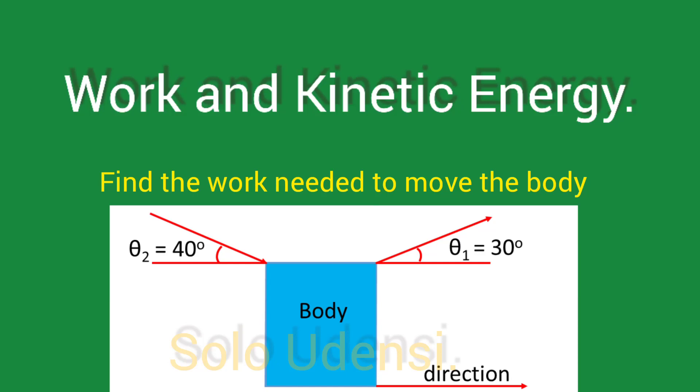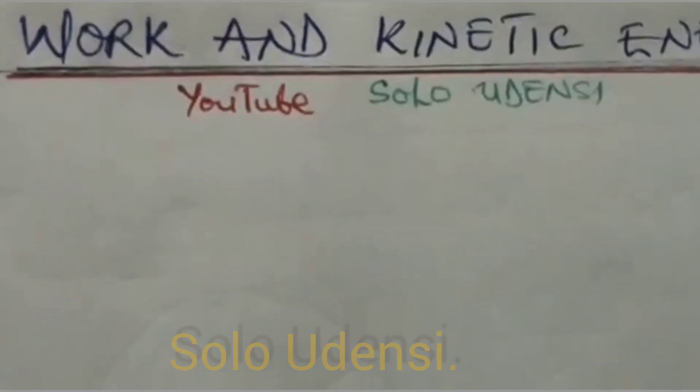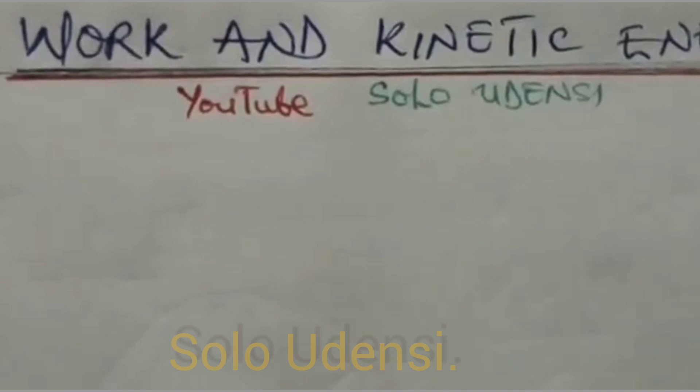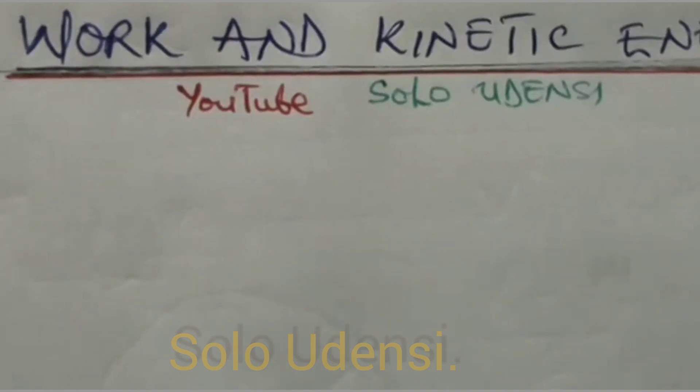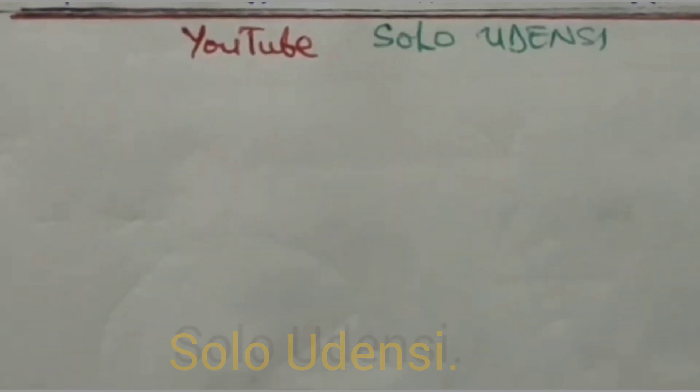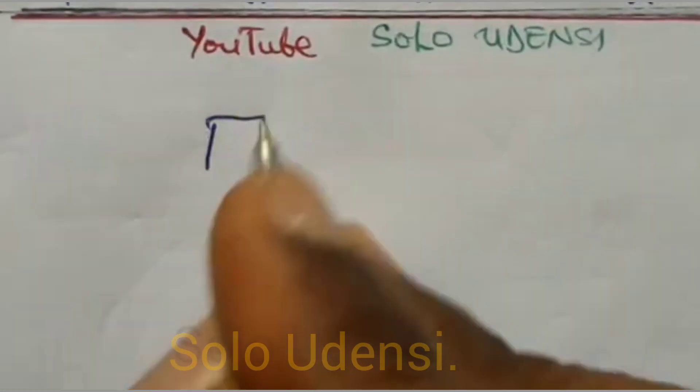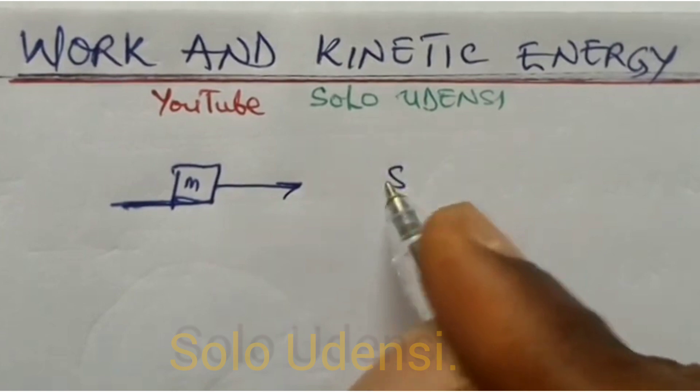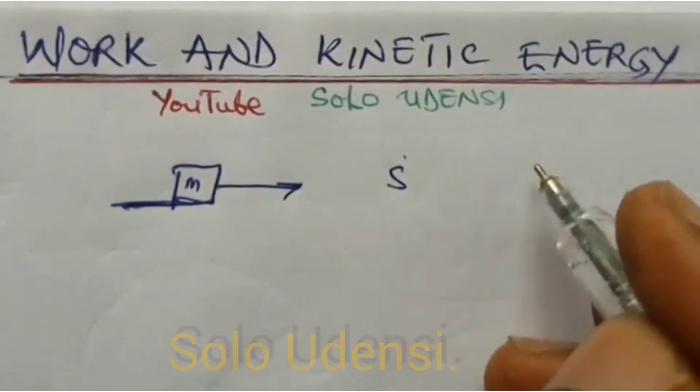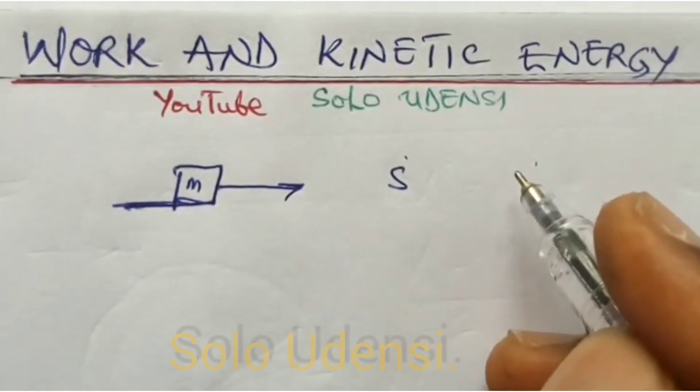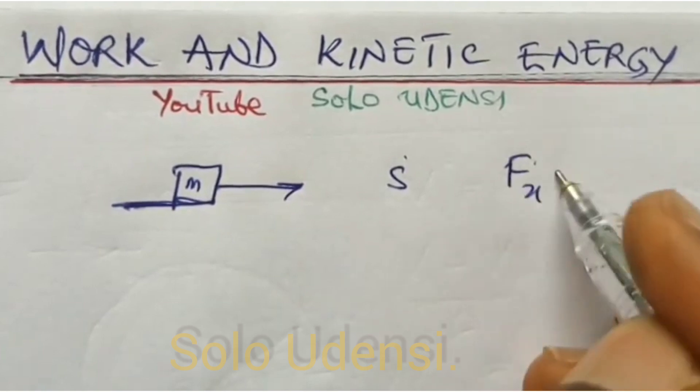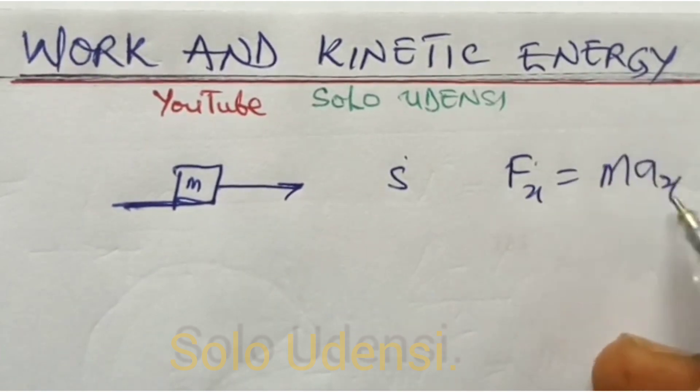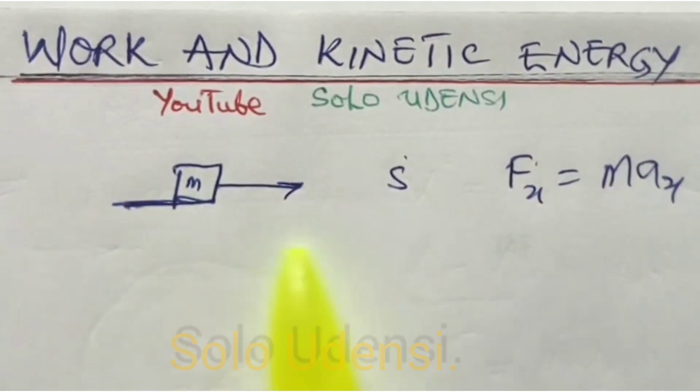Work and kinetic energy. Let us assume that a constant force moves a body of mass M along an X axis without friction, a distance S, so that according to Newton's second law, we have that Fx is equal to Max.